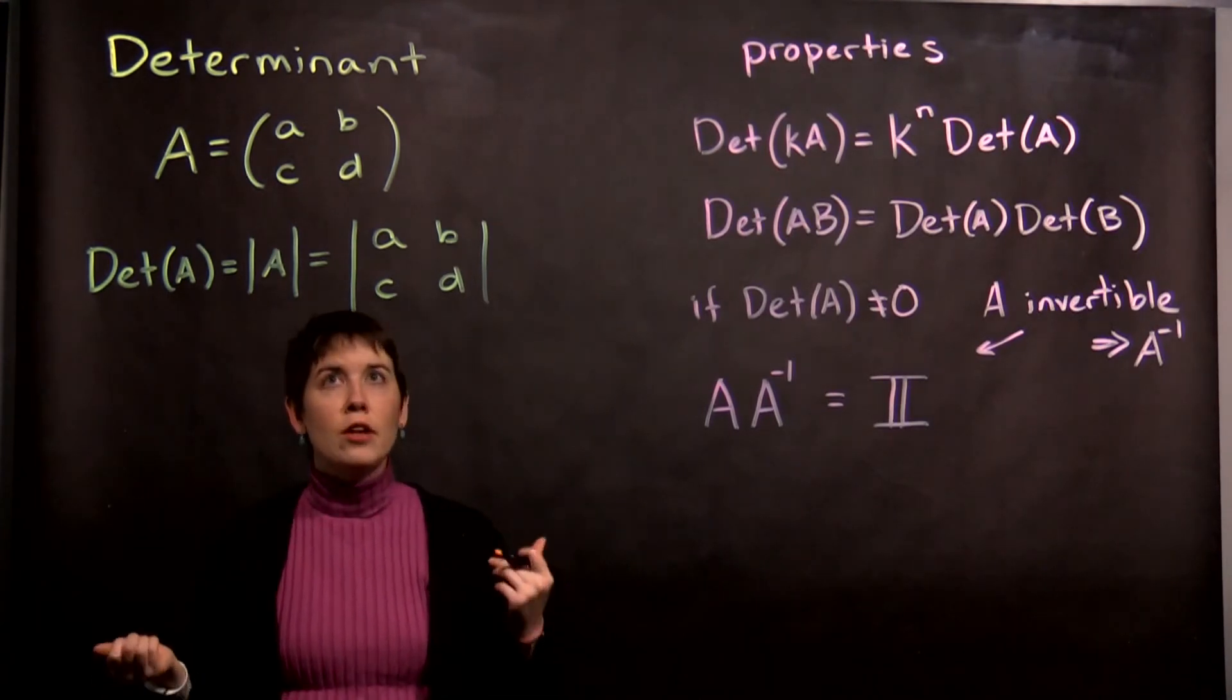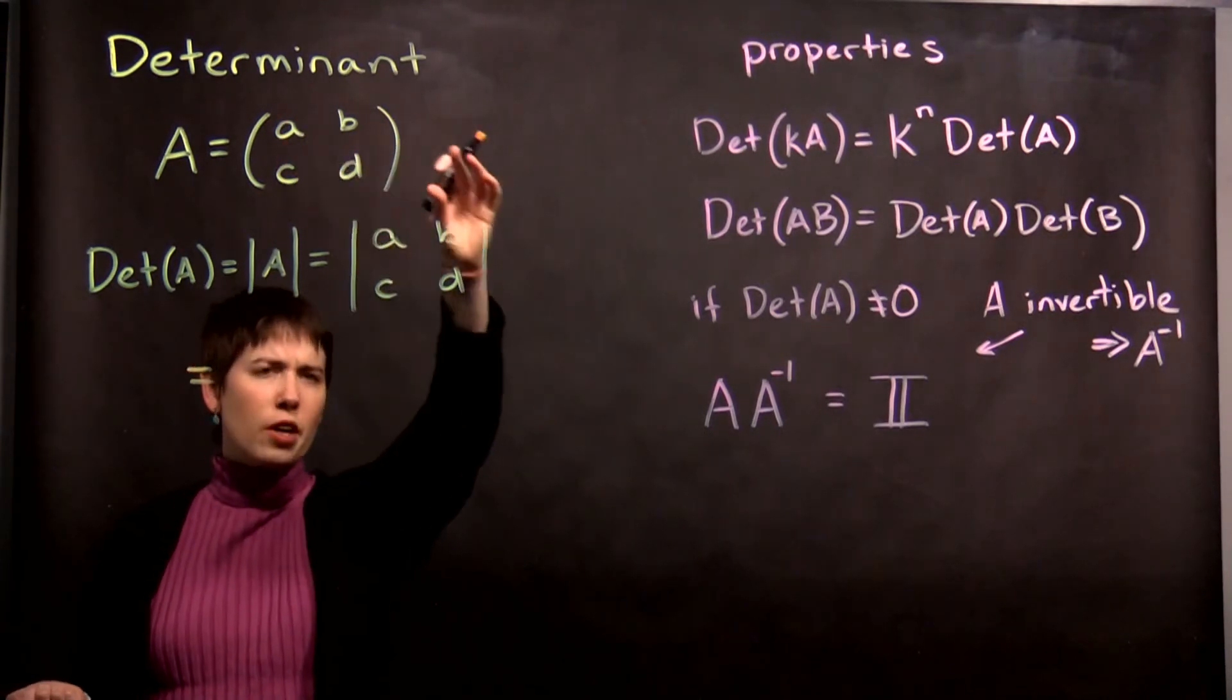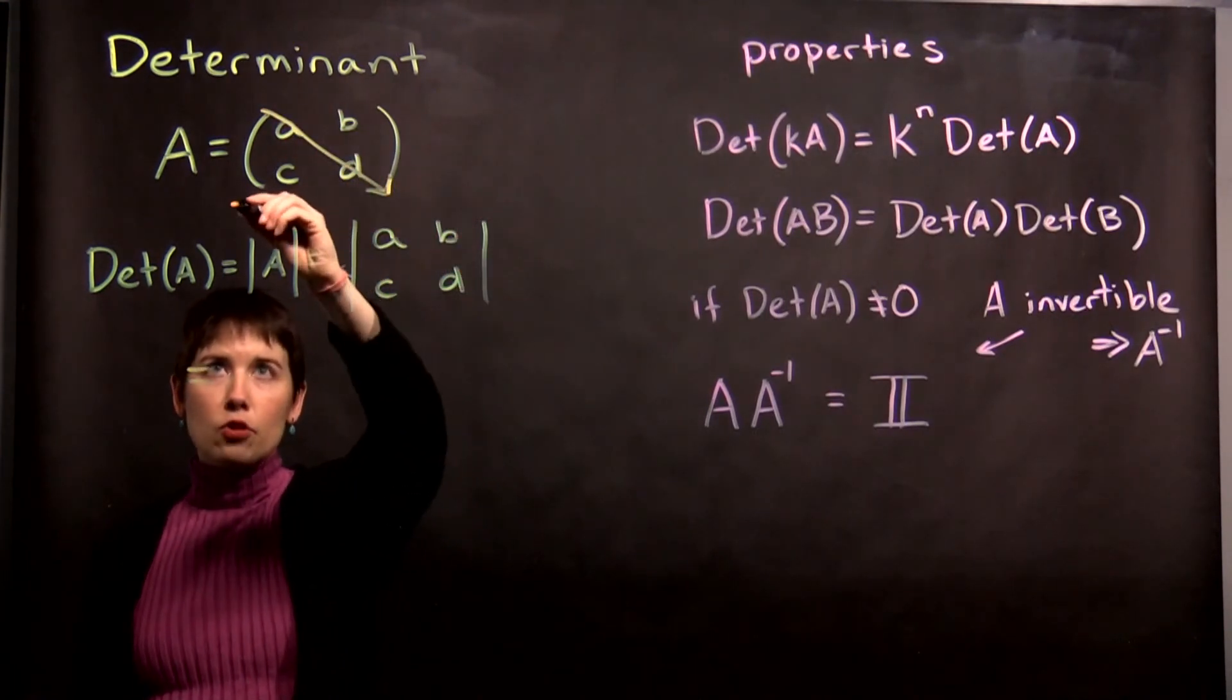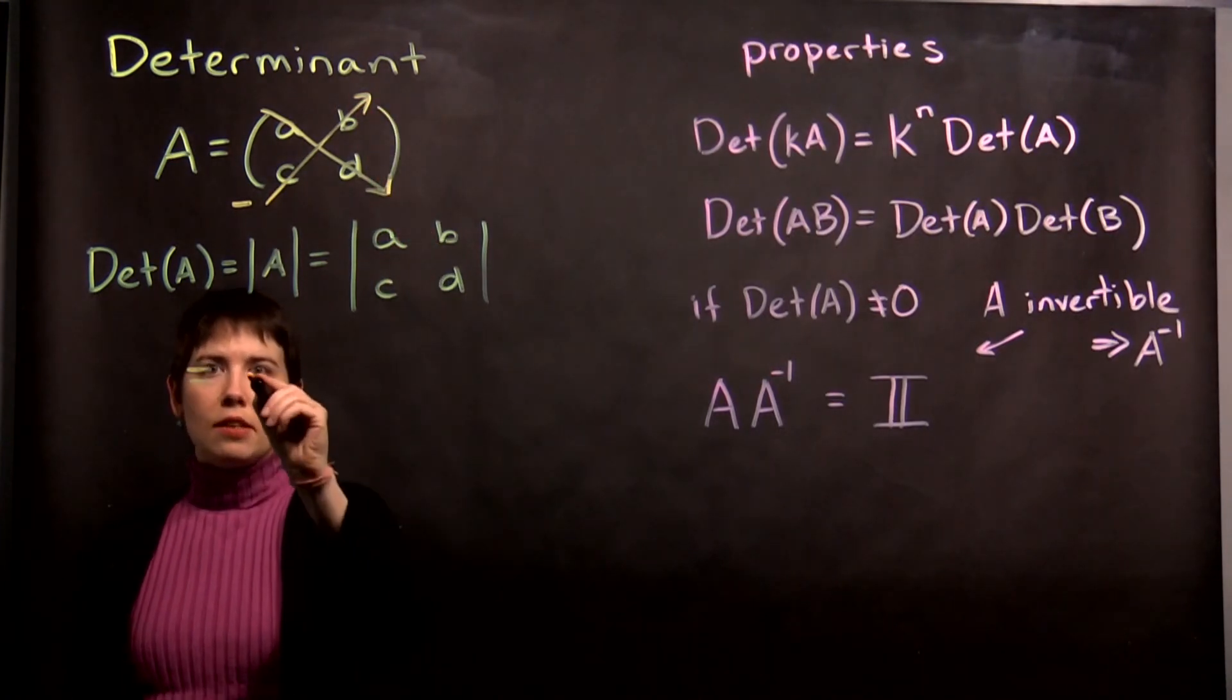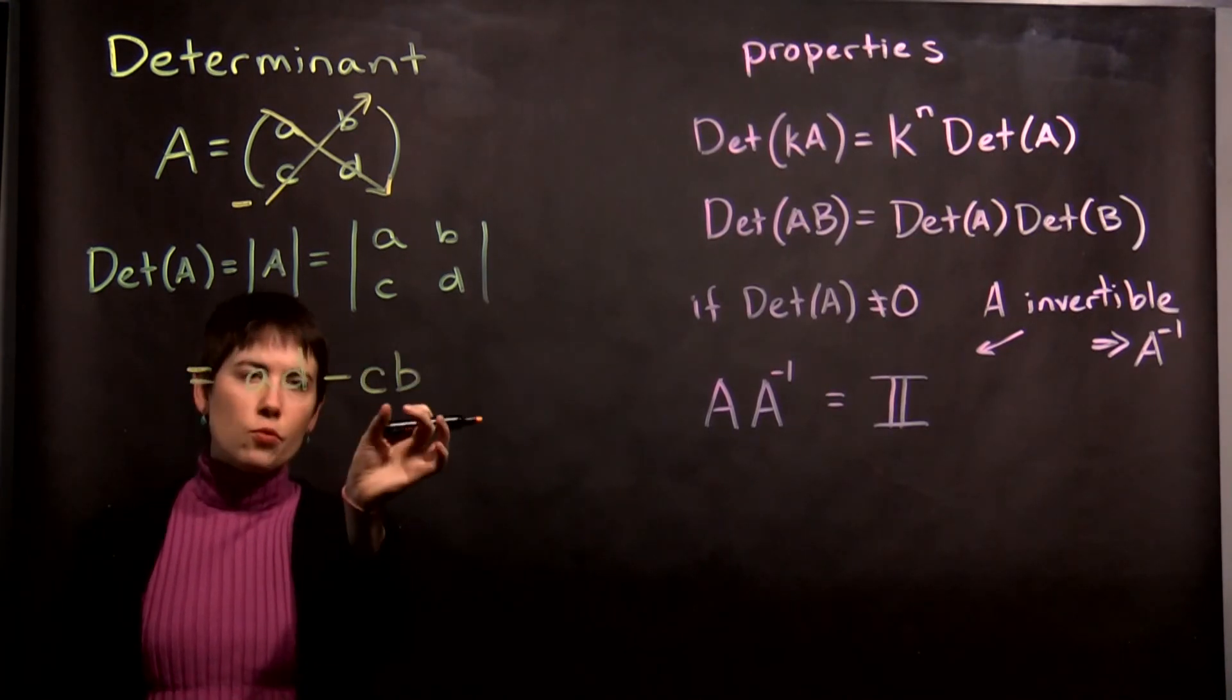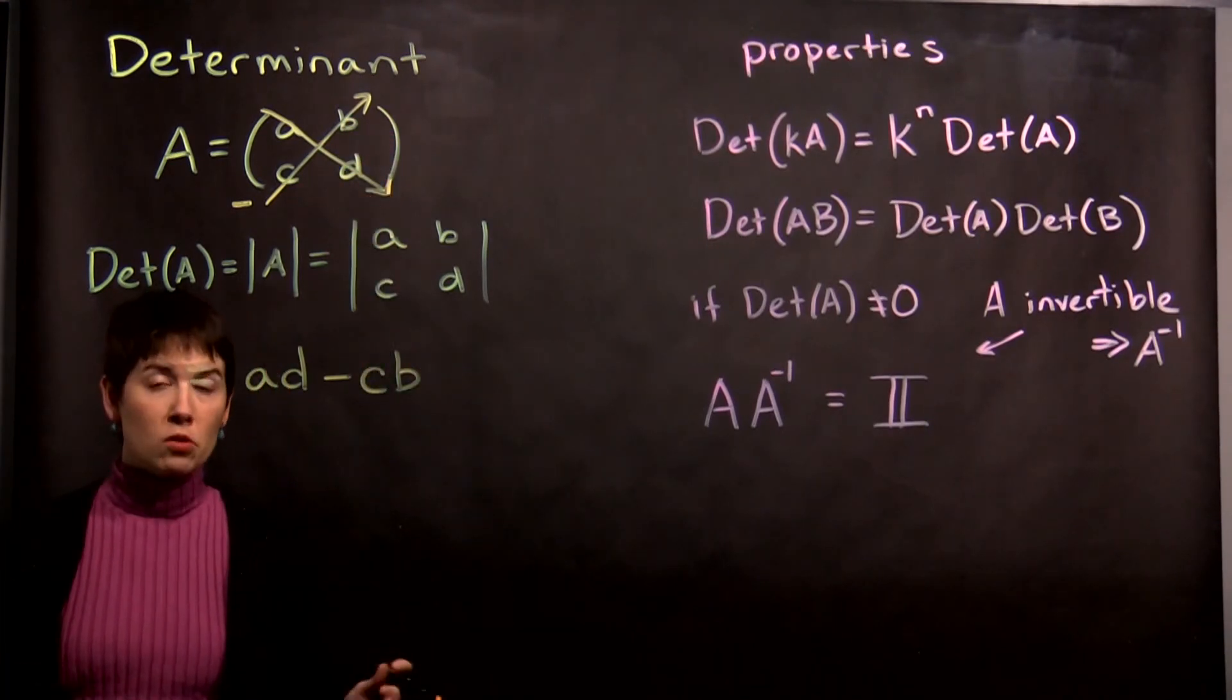So a method for calculating the determinant of A, in this case, and I've used variables just to make it clear, you first multiply this diagonal and then you subtract this diagonal. So what that means is A times D minus C times B. I've left it written in this order, but since these are scalar entries, you can flip that. So that's it.